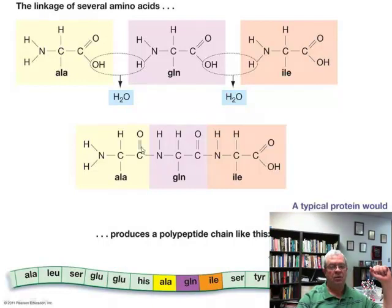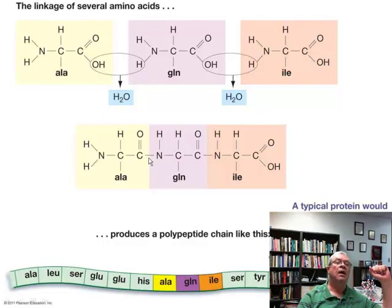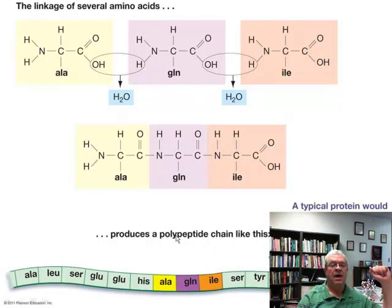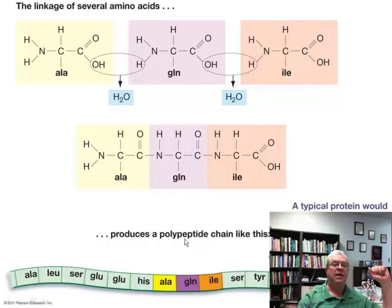So what actually gets joined together? If we look at this middle diagram here, we see the new bond formed between the carbon of this carboxyl group and the nitrogen of this amino group. That new bond is called a peptide bond. The bond between any two amino acids is called a peptide bond, which leads to the term polypeptide. When you have many hundreds of amino acids joined together, you have many hundreds of peptide bonds, so a protein could be called a polypeptide — many peptide bonds.